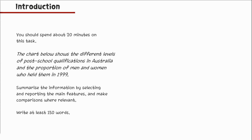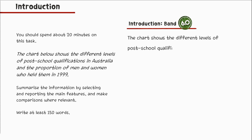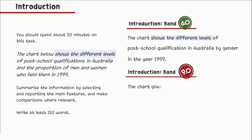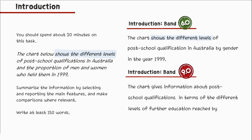Remember that you have a band 9 introduction if you can successfully paraphrase the question statement. Let's study these two introductions. The original heading reads: 'The chart below shows the different levels of post-school qualification in Australia and the proportion of men and women who held them in 1999.' The band 6 introduction reads: 'The chart shows the different levels of post-school qualification in Australia by gender in the year 1999.'